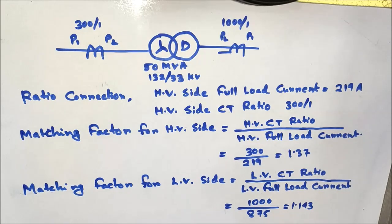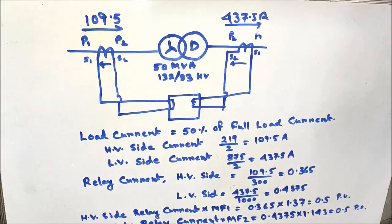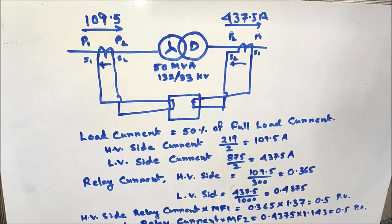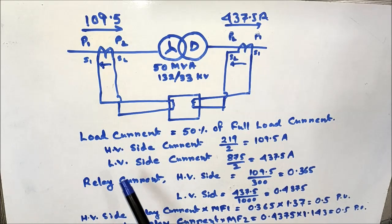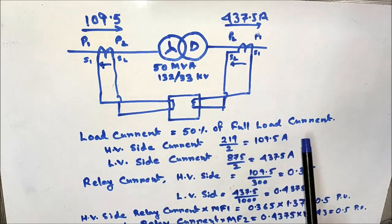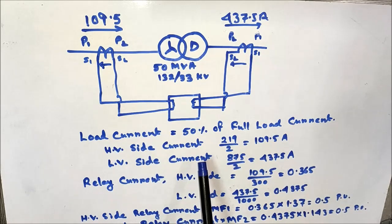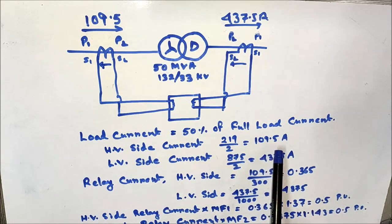We will now see how the matching factor matches the HVCT and LVCT currents entered into the numerical relay. Consider current flowing at 50% of full load current. The HVCT primary current is 219 divided by 2, equal to 109.5 A, and the LVCT current is 875 divided by 2, equal to 437.5 A. Nominal tap has been considered for the transformer.